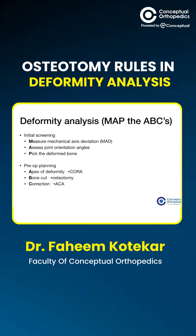Deformity analysis is a stepwise approach. It consists of initial screening, which includes measuring the mechanical axis deviation, then assessing the joint orientation angles, and then picking the deformed bones. Once initial screening is complete, we do the pre-op planning, which consists of finding the apex of the deformity, planning the bone cut, and planning the axis of correction. So let's start the initial screening — our first step is to measure the mechanical axis deviation.